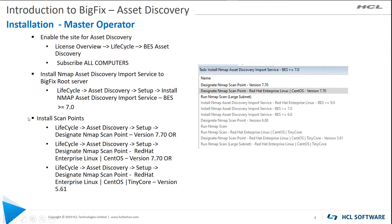To install it, you do need to be at Master Operator, and these are the install steps. You need to enable the site for Asset Discovery, License Overview, Install, Lifecycle, Best Asset Discovery, and subscribe all your computers to that site. Then you install Asset Discovery, the import servers, and that's going to go into your root server — here's a path to that specific task.